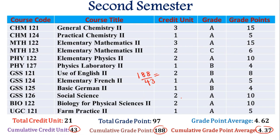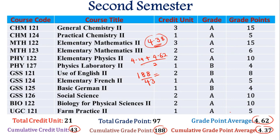Now let me tell you the mistake I made — the one that made me wrongly fume at my course advisor. I took my first semester GPA of 4.14, added it to the second semester GPA of 4.62, and divided by 2, getting 4.38. But when I saw my result on the board it showed 4.37. I was angry thinking they cheated me. My lecturer explained: you don't calculate CGPA using your GPAs — you use the cumulative grade points.